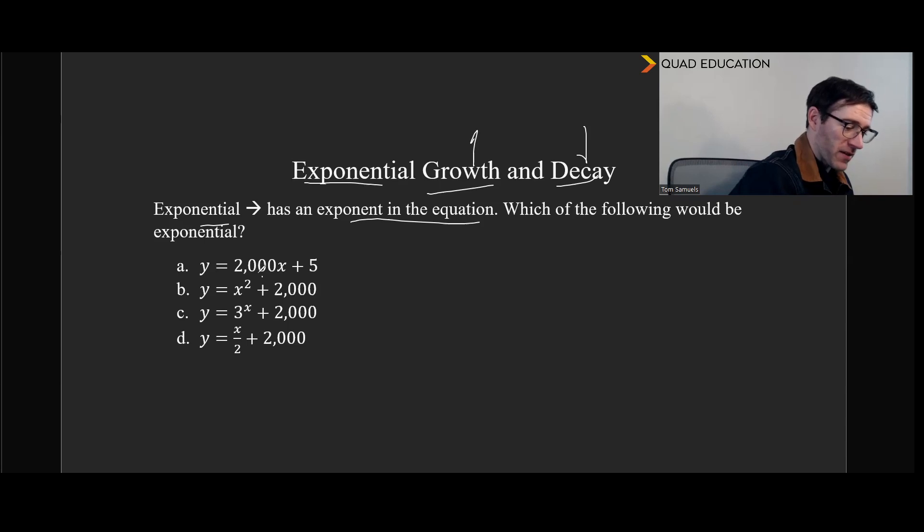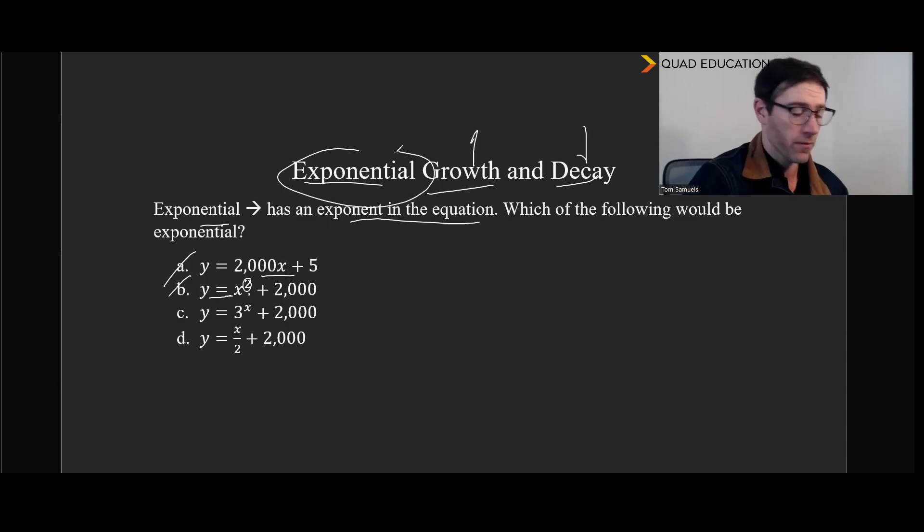Well, certainly not A because that's linear. What some people may pick is B, but the issue there is there's just a number right there. So an exponential growth or decay equation will have an input, a variable, as the exponent. In this case, the exponent is just a constant and the input is still a value. It's not until option C here, we have 3 to the x, we see our first exponential, first and only, exponential equation.